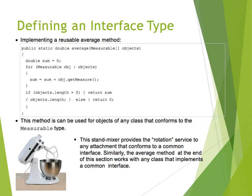In an if statement we check whether the length of the array is non-zero and if so, we return sum divided by the length of the array. Otherwise, if the length is zero meaning there are no objects, the average would be zero and it returns zero.